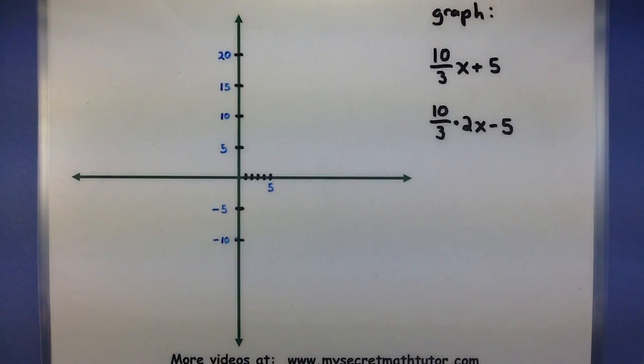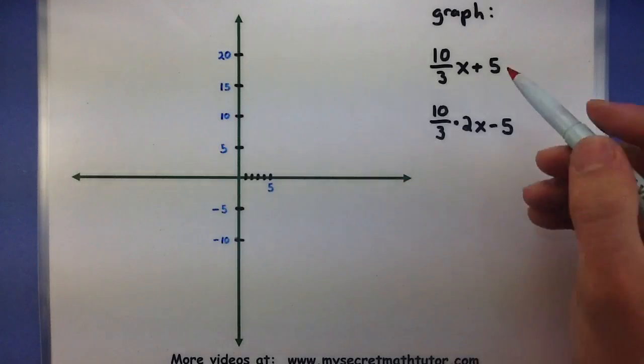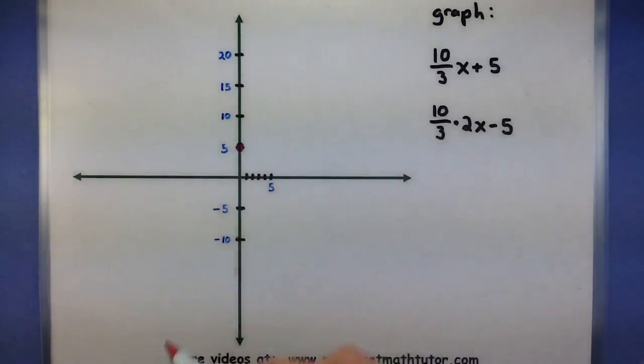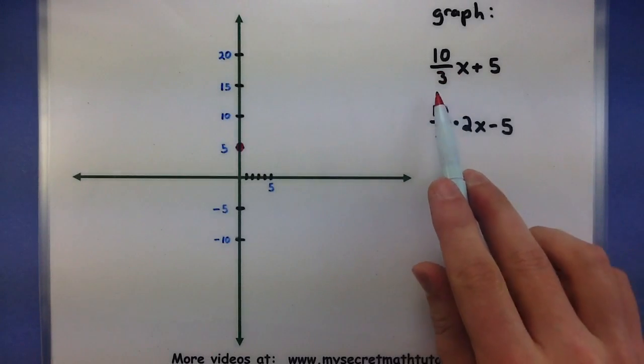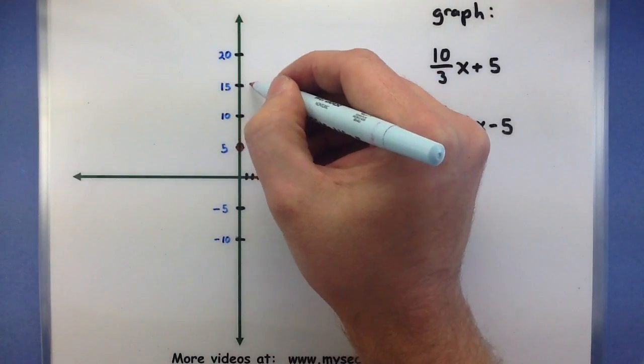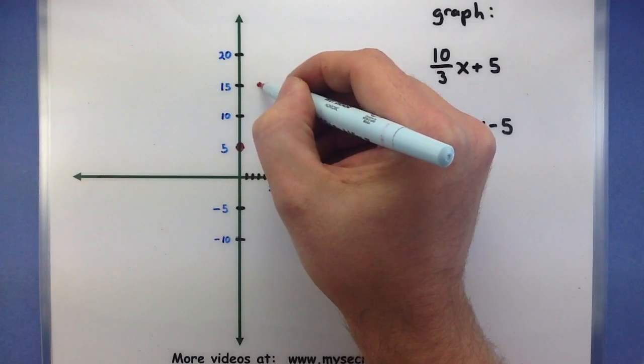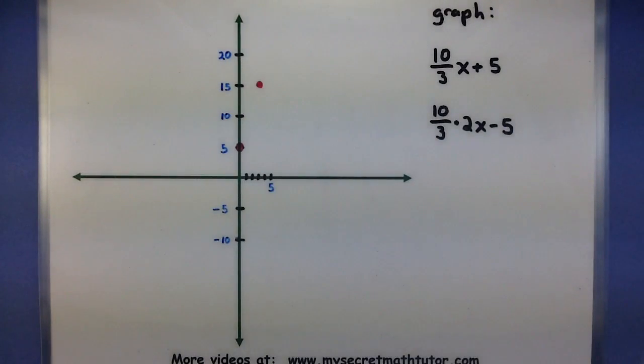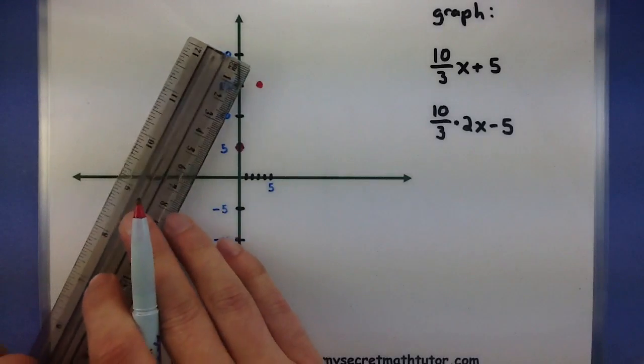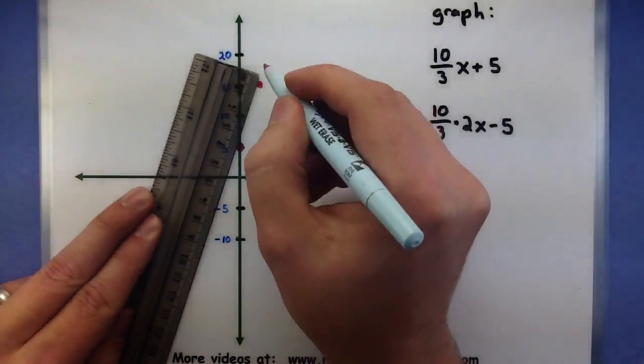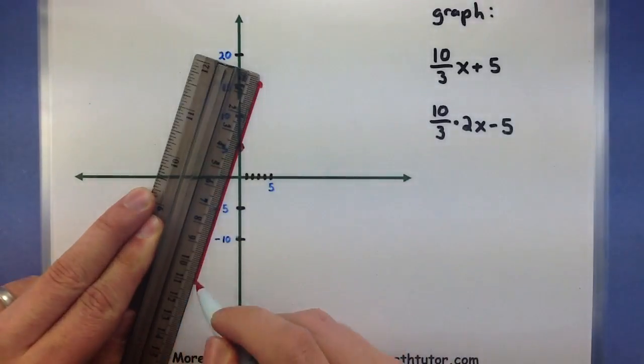Okay, so as we graph the first one, it goes through the y-intercept of 5, so it definitely goes through this point. And then to find another point, I would go up 10, to the right 3. So from 5, up 10, to the right 1, 2, 3, it looks like it goes through this point right here. And of course, it acts like this for values that are less than 3, so I don't need to draw it any more than that. There's my line.